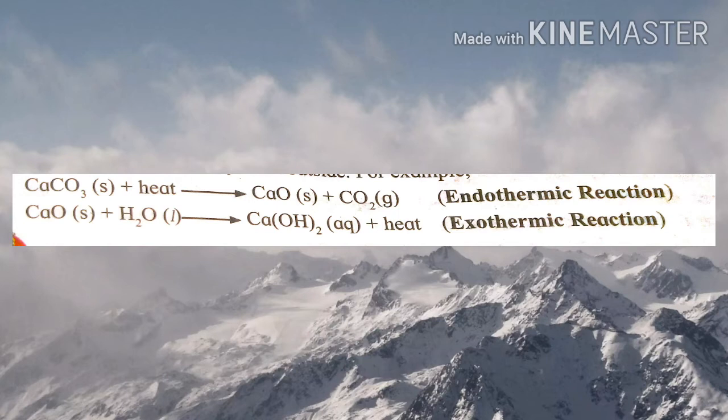Because of this, calcium carbonate gets converted into calcium oxide and carbon dioxide. The second example is CaO + H₂O → Ca(OH)₂ + heat. Here heat energy is given out, therefore it is an exothermic reaction.